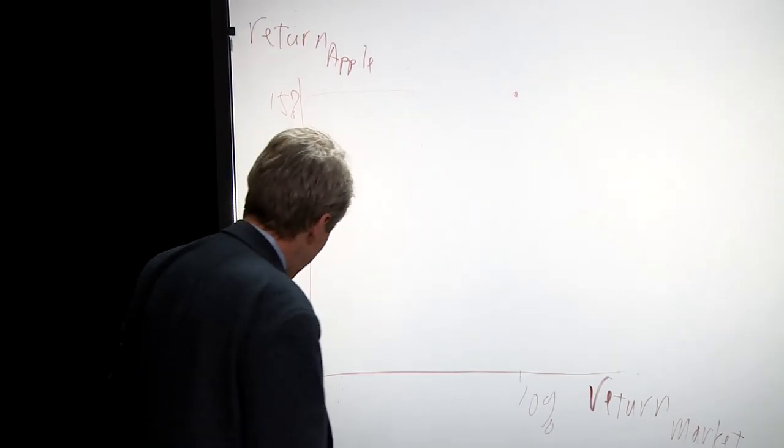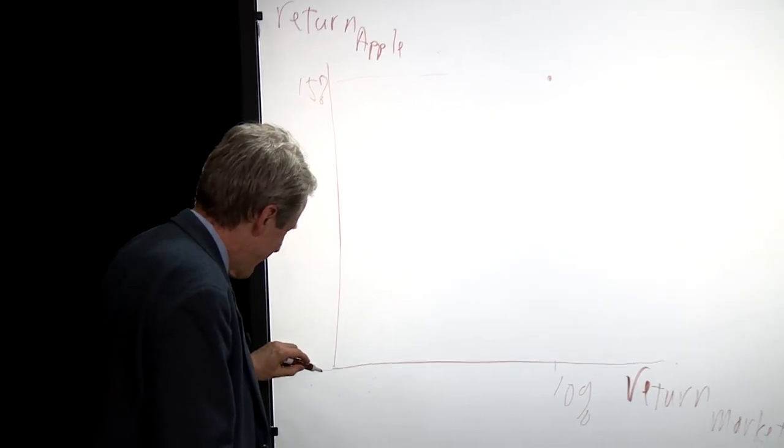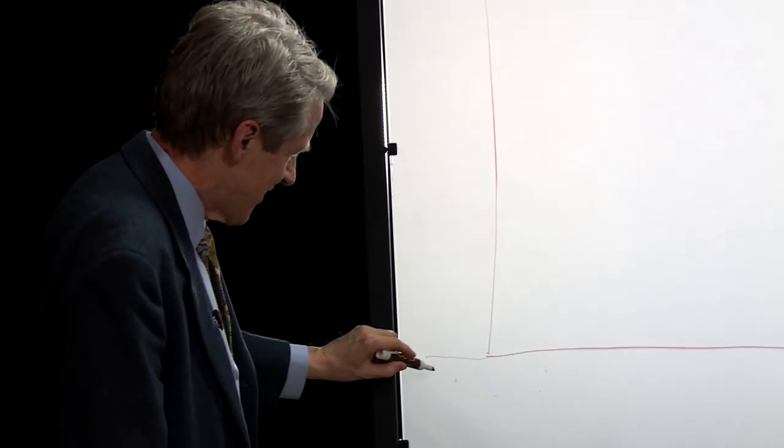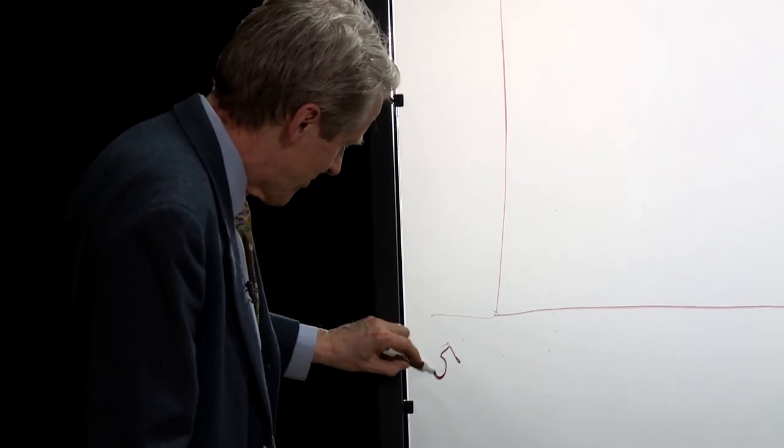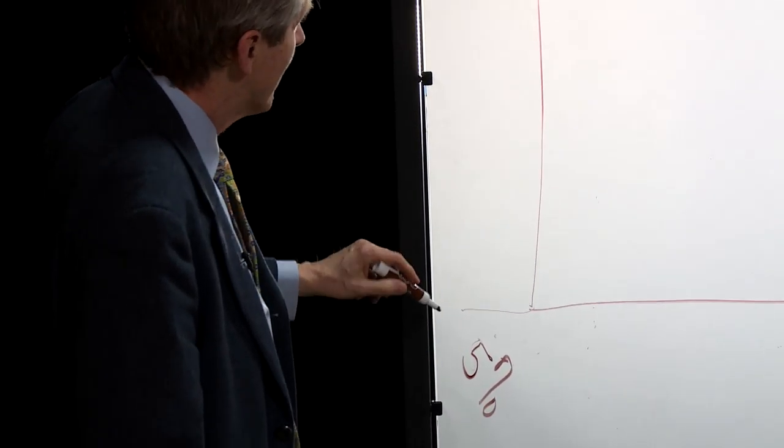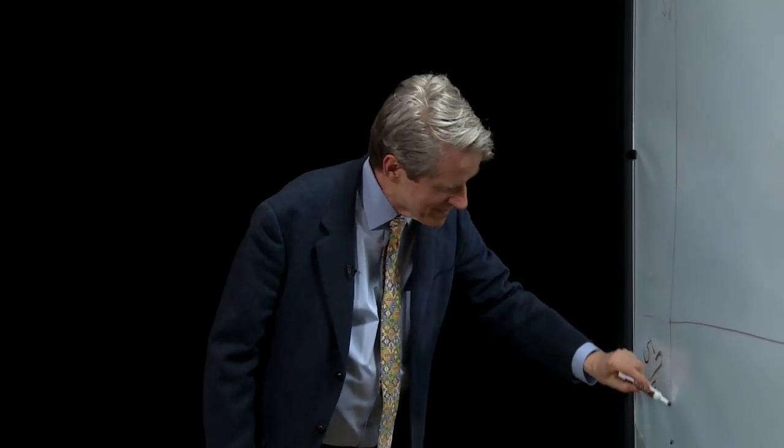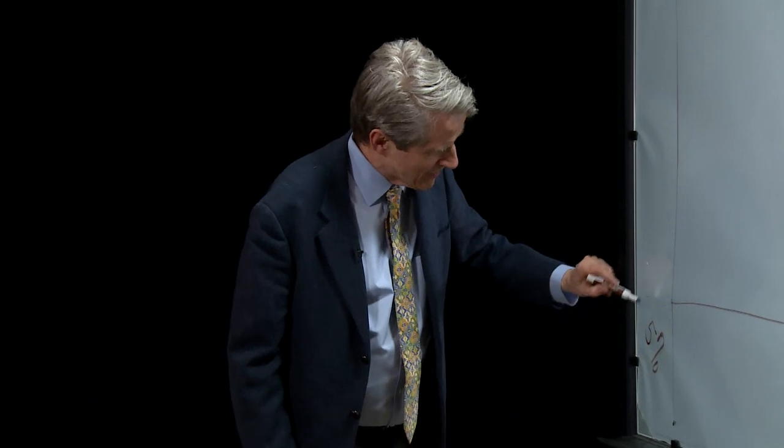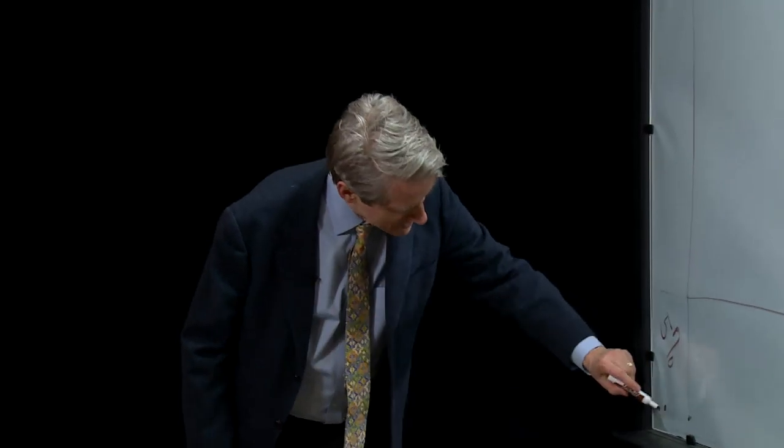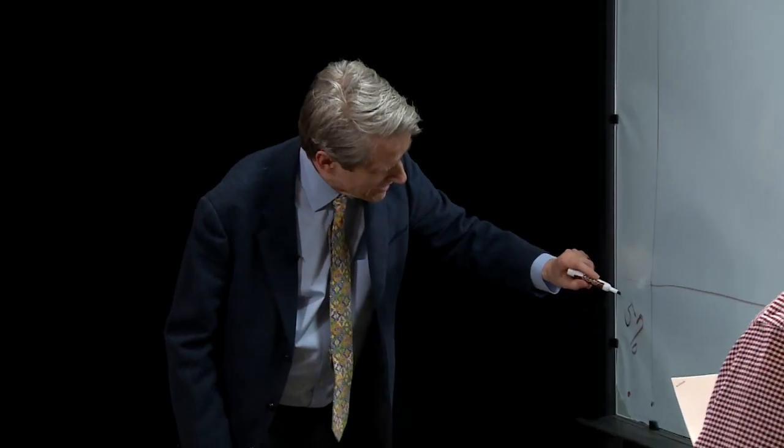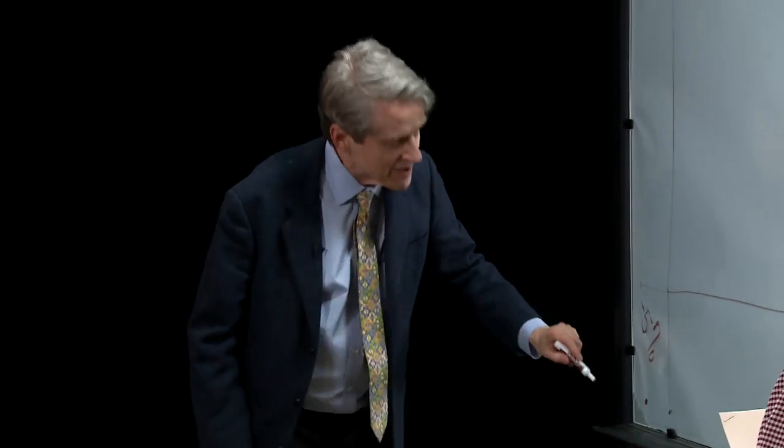In some years, the market goes down. Let's not forget that. So here I'll say there was another year when the market did minus 5%. What did Apple do in that year? Well, let's say Apple did minus 10%. So I get a point down here. This is minus 10 and this is minus 5. So I have a point down here.